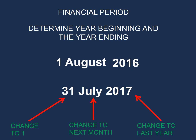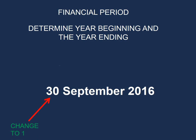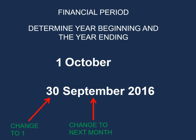Let's have a look at another example. Here is a trial balance extract with a year ending of 30 September 2016. Applying the same method: the day we change to 1, so 30 becomes 1. The month we change to the next month — the next month after September is October. And for the year, we change 2016 to the previous year, which is 2015.